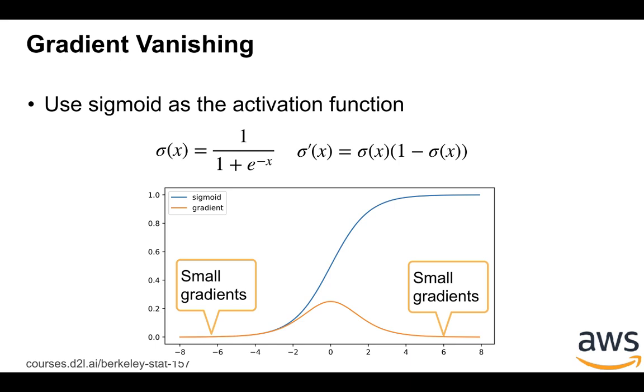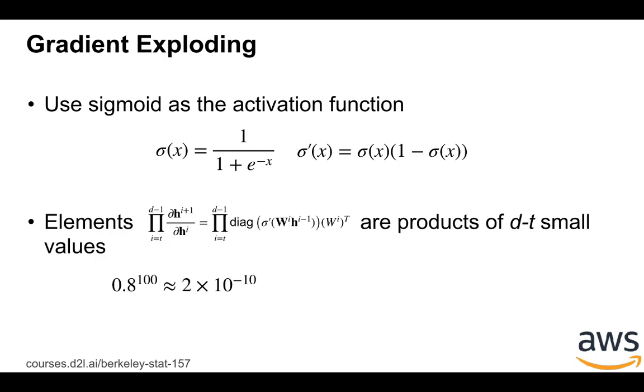the orange line is the gradient function of sigmoid. What we can see is that even when the x value is not too large—for example, slightly larger than 4 or slightly smaller than -4—then we get a very small gradient. And the problem here is that because the gradient is a multiplication of all these diagonal matrices, and this diagonal matrix can contain very small numbers. Then the gradient is just a product of d minus t small values, so the elements could be very small.